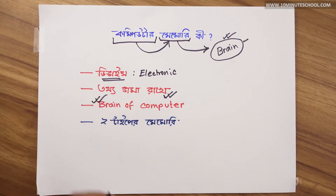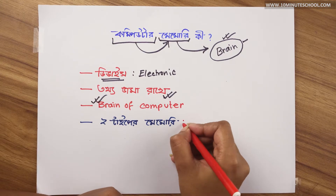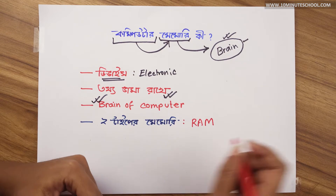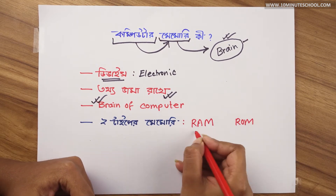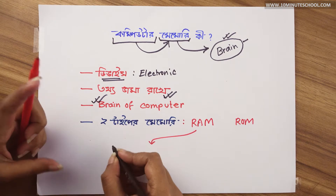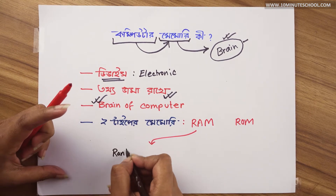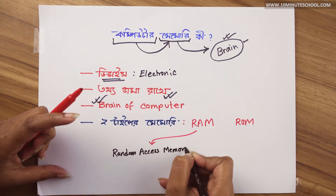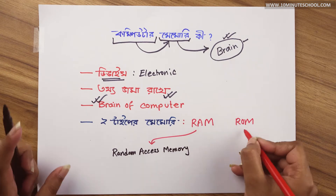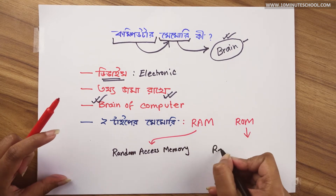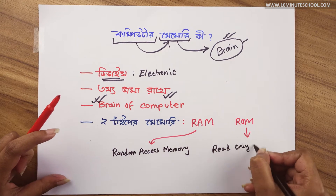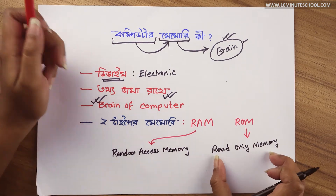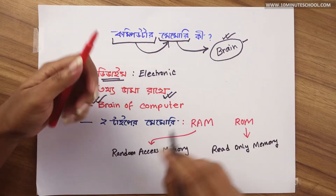Let's look at two types of memory. One is RAM. Two is ROM. RAM is random access memory. ROM is read only memory.